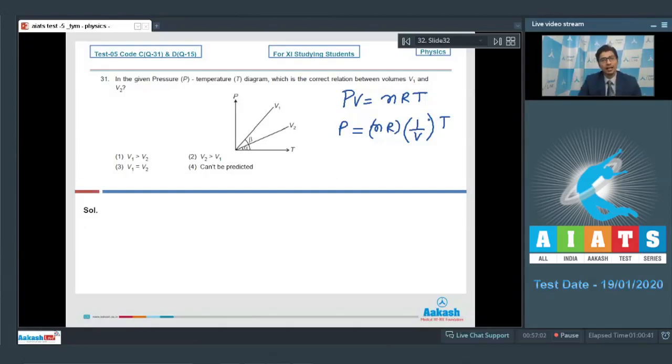So in a PT diagram or the PT graph, this slope is proportional to 1 by V, which means that greater the slope, lesser will be the value of V.